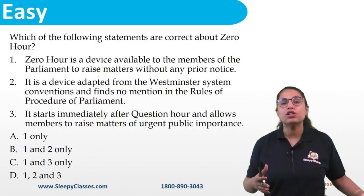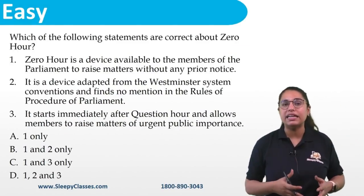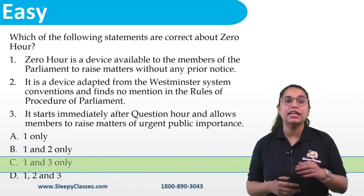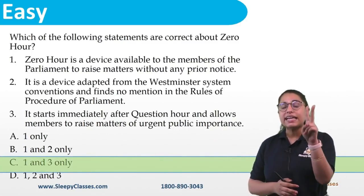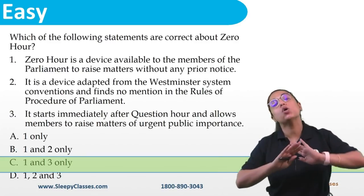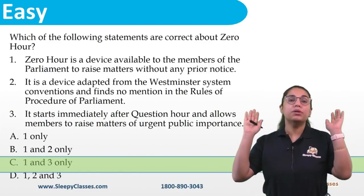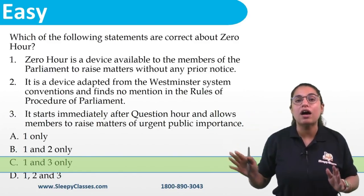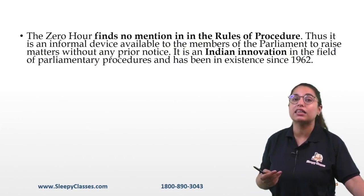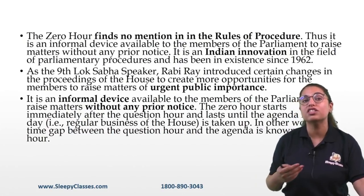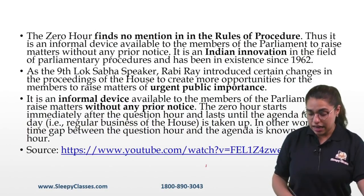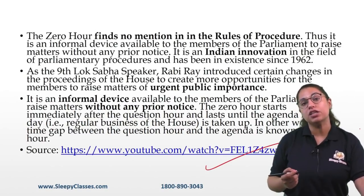Next is an easy-level question about Zero Hour. The correct answer is one and three. The second statement is wrong: Zero Hour has no connection with Westminster — the British Parliament does not have a Zero Hour. This is actually an Indian innovation in parliamentary proceedings, introduced from 1962 onwards. This has been discussed in detail in the 2-minute series on Parliamentary Proceedings.